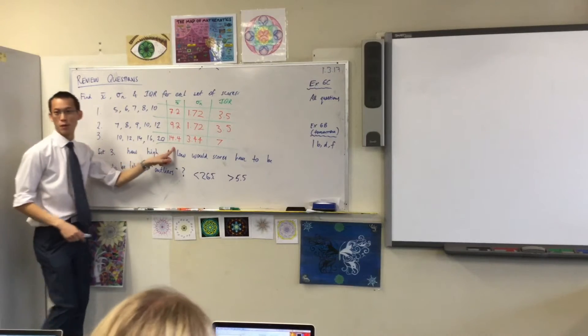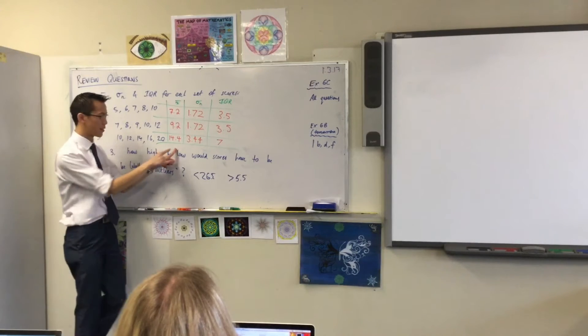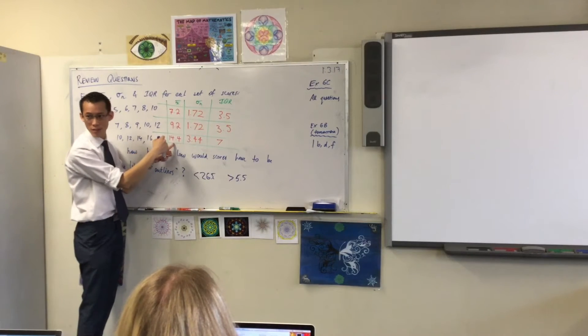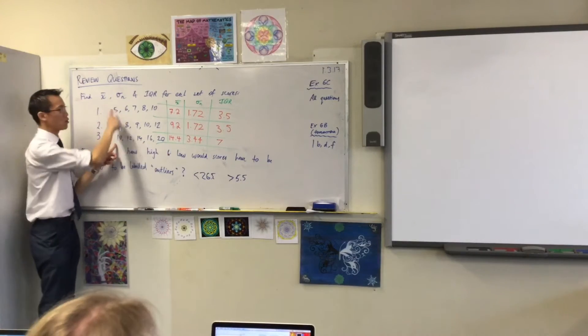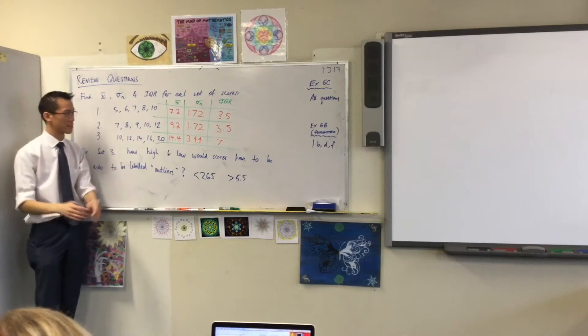In the same way, if you have 14.4—do you see 14.4? It's not a coincidence. It's exactly double 7.2, and that's because you take scores, you double them. No surprises there.